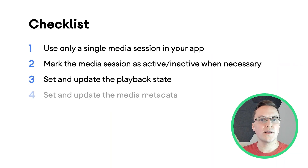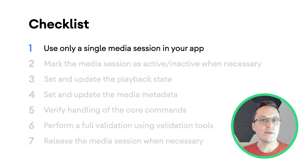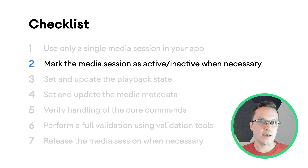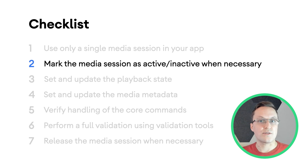Let's review a checklist for building a great media experience on Android. First, make sure only a single media session is being used in your app. Check the places where your media session is created and validate that there's no pathway for duplicate ones to be created in parallel. Critically, mark the media session as active and inactive when necessary. If you don't support media playback in the background, this will generally be in your activity and fragments' onStop and onStart methods. If your app plays music in the background, the media session should be marked as active when the service starts and inactive when the service is finished.